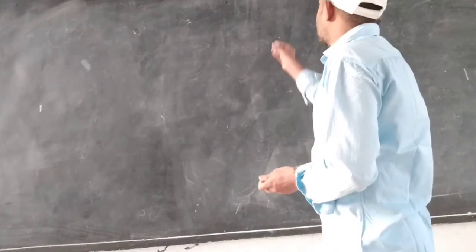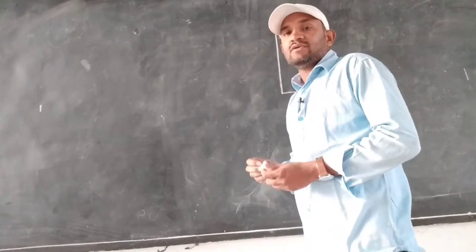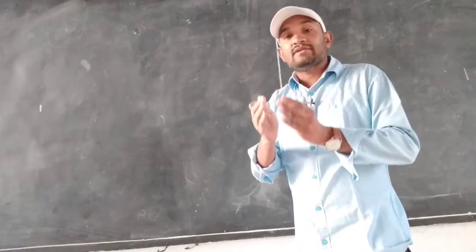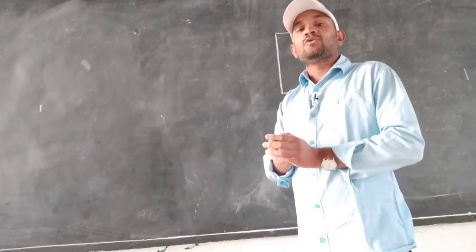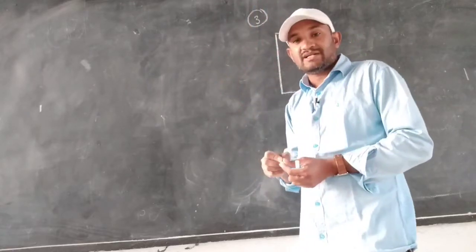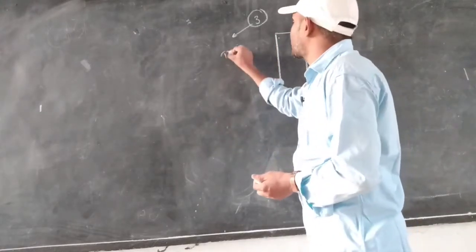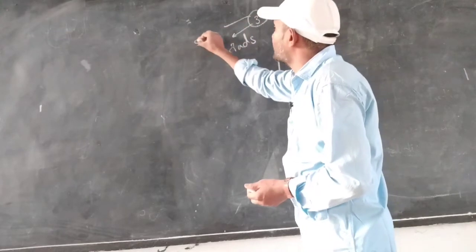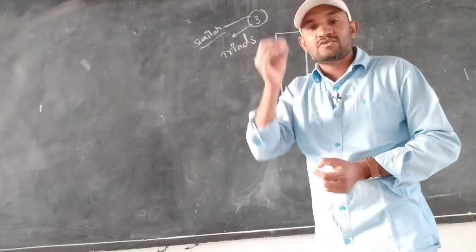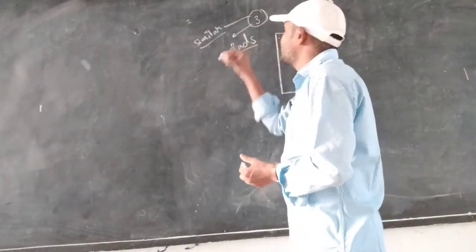Dobereiner's Law of Triads — in the last class also we discussed, and once more we have to cover these concepts. On the basis of similar properties, the elements which have similar properties are arranged in one group. In one group, only three elements are arranged, that's why these three elements we have to consider as a triad.